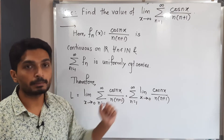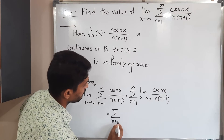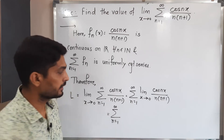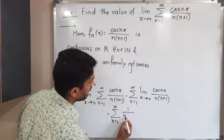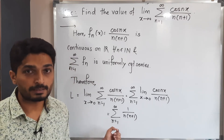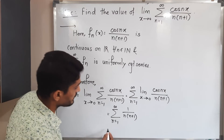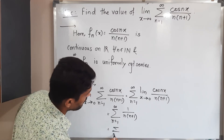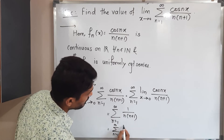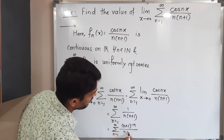Let us apply the limit. This is equal to summation n running from 1 to infinity. If you apply the limit as x tends to zero, you will have cos(0), and cos(0) is 1. So this becomes the summation of 1 / [n(n+1)] from n = 1 to infinity. We have to find the value of this series. One adjustment I am going to make: summation n running from 1 to infinity.